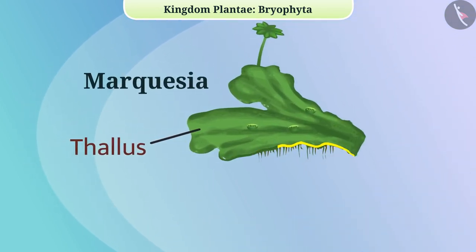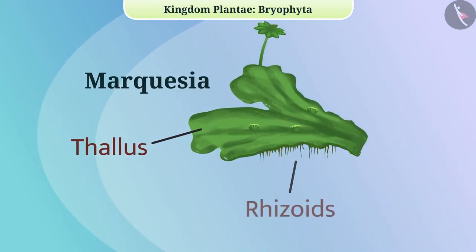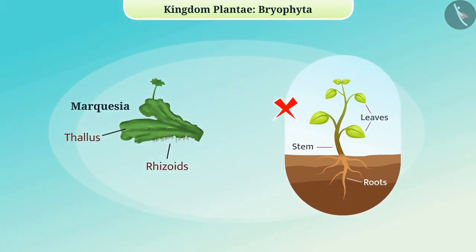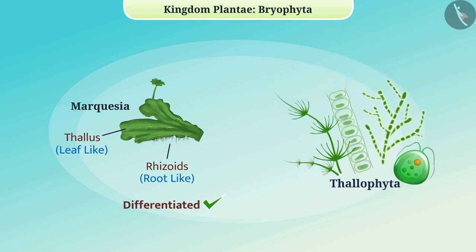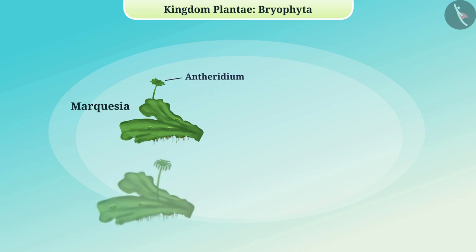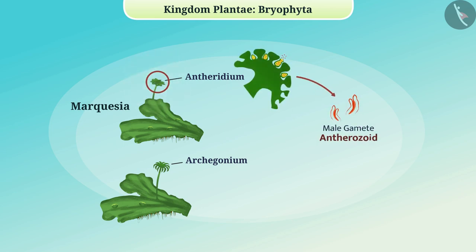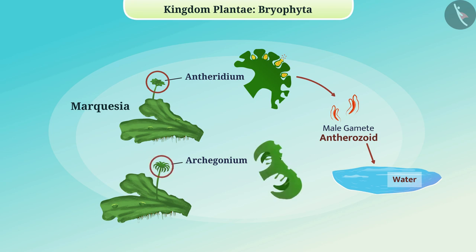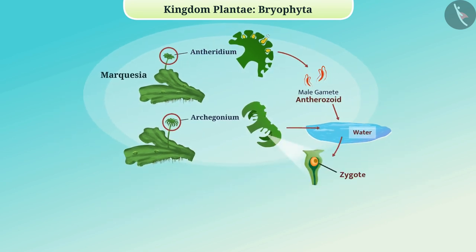They are attached to the substratum by unicellular and multicellular rhizoids. They do not have developed structures like roots, stem, and leaves, but they have similar structures, so their bodies are more differentiated than Thalophyta. In these plants, sexual organs are multicellular. The male sex organ is called antheridium and the female sex organ is called archegonium. The male gamete antherozoid is released into water, where fertilization occurs with the female gamete egg, forming a zygote that develops into a sporophyte, whose cells form spores that produce new organisms.